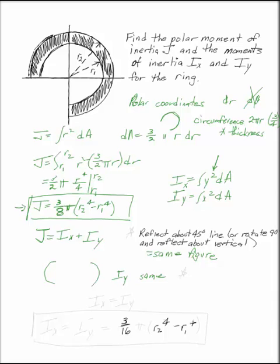It doesn't matter how far off the axis your mass is. The question is how much of your mass is off the axis. So by these observations, we can say IX has to be equal to IY because this figure is symmetric about that 45-degree line.